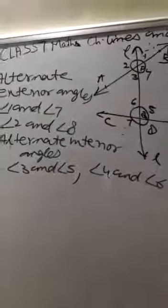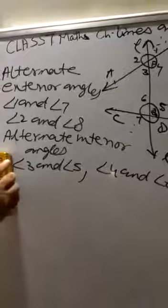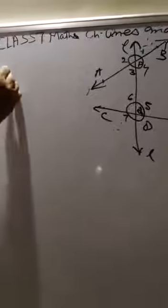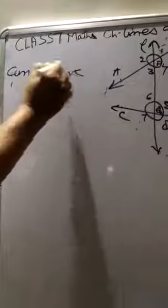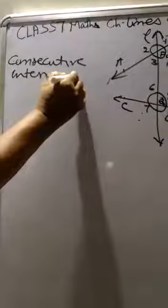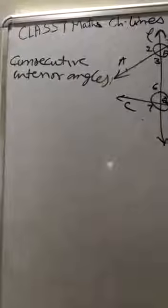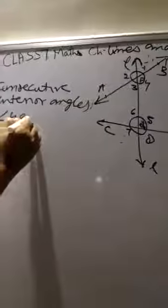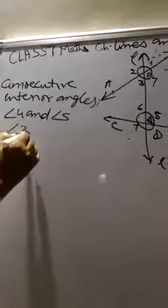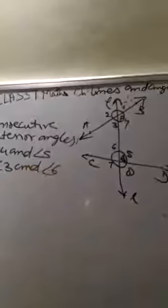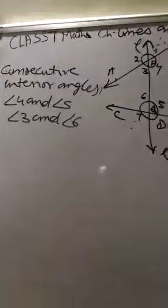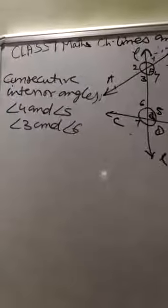Next, consecutive interior angles. These are: 4 and 5, 3 and 6. These are the consecutive interior angles.